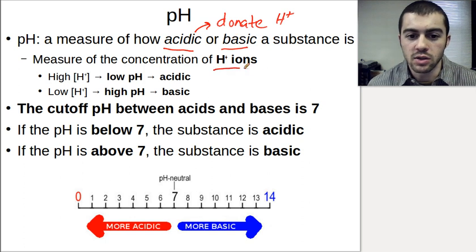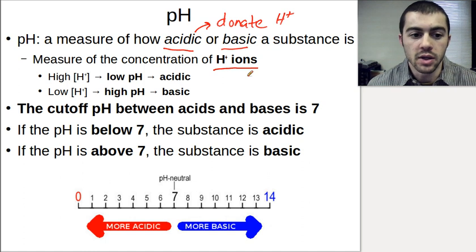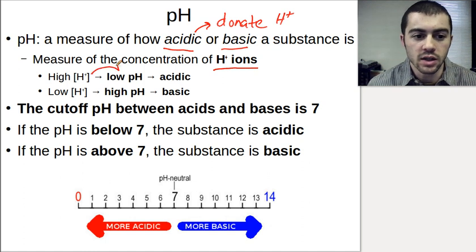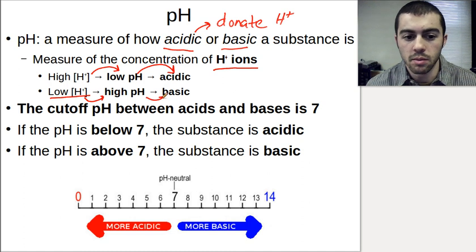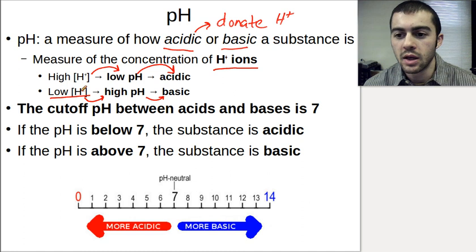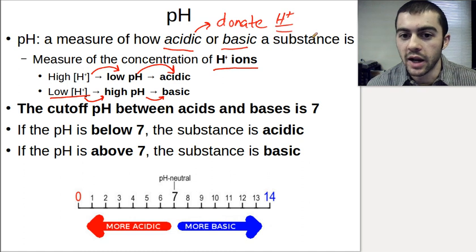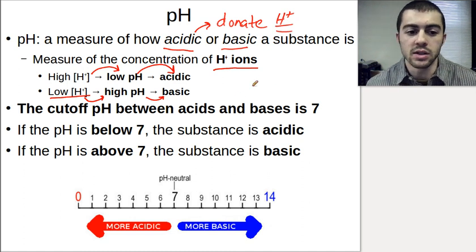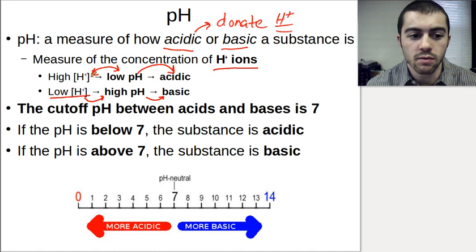pH is a measure of the concentration of H⁺ ions in a solution. If an acid is really good at donating protons, it will dissociate well — making it a strong acid. A high concentration of H⁺ ions gives a low pH, making it more acidic. Conversely, a low concentration of H⁺ ions gives a high pH, which is more basic. This is an inverse relationship: the higher the H⁺ concentration, the lower the pH.